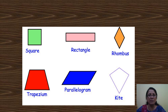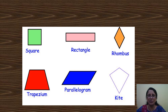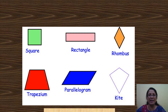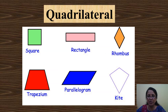Now here you see the shapes with four corners and four sides. There are so many: square, rectangle, rhombus, trapezium, parallelogram, and kite kind of a shape. All these types of shapes have a name in common. All the shapes that have four corners and four sides have got a common name, and that is quadrilateral.